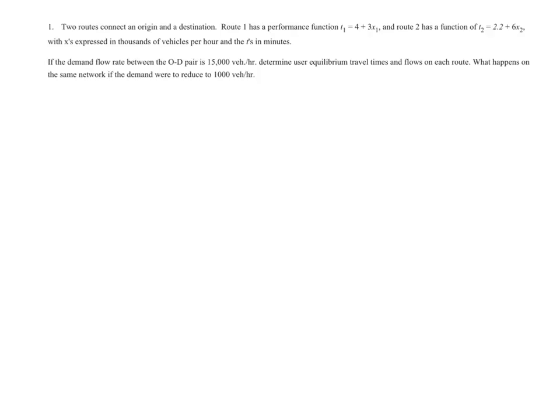So the first equation is easy, because I can just say, from the conservation of flow principles, that x1 and x2 should be equal to 15. Now make a note here, you don't want to make it 15,000. Make sure that you note that this should not be 15,000, because my x's are expressed in thousands of vehicles per hour. So that's why I'm just putting in 15, and not 15,000.